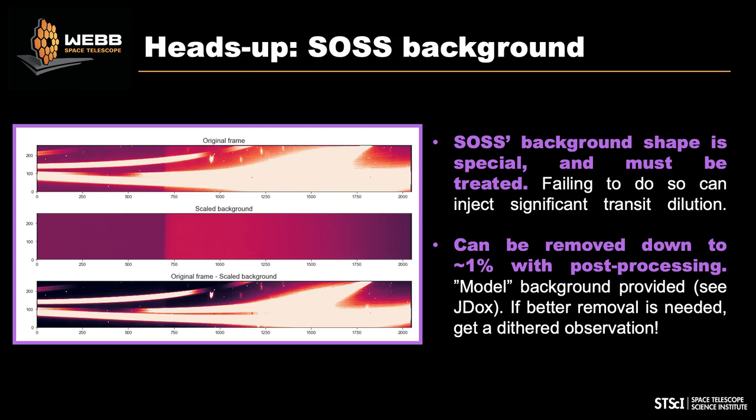The other heads-up is the source background. We documented this in JDocs because this source background is very small, but because we're doing precise transit observations, you need to remove it to avoid dilution in your final transit spectrum. We took observations during commissioning of a background region and produced a smoothed version available in JDocs as a box file for post-processing. You can remove this down to 1%, and if you need better, you can add extra observations around your target.